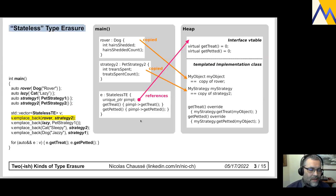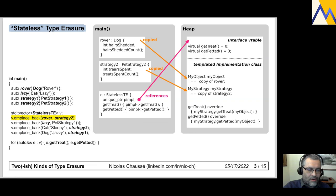So the structure is: on the left is my code; in the main function, I've created Rover as a dog and strategy two. A stateless type-erased object is created, and its pimple points to the vtable of the templated Implementation class. getTreat is called, the pimple dispatches via the vtable, and the actual template-instantiated Implementation class's getTreat gets called.